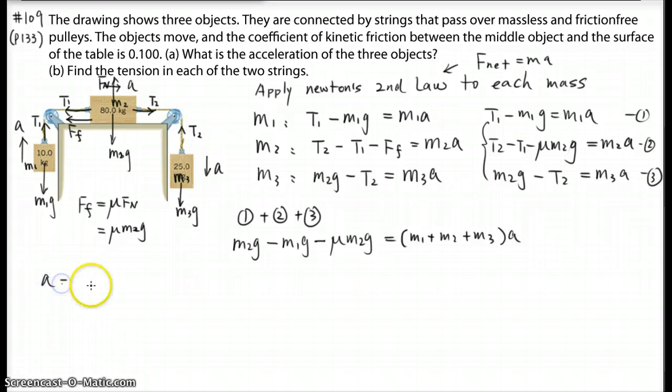So we can solve the A equals, on the top we have M3G minus M1G minus mu M2G divided by M1 plus M2 plus M3. So I'm going to save the time to do the calculation. So the answer would be 0.597 meters per second squared.